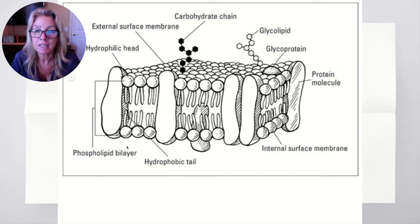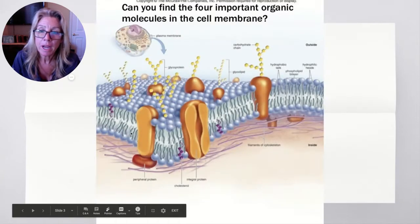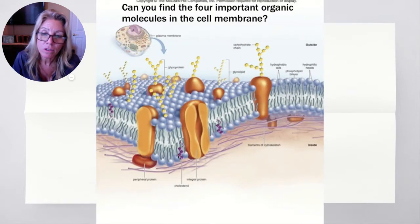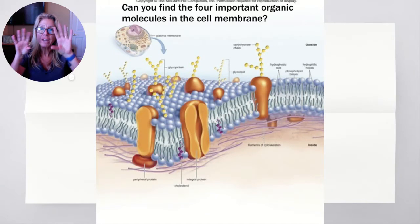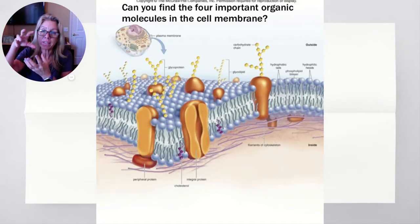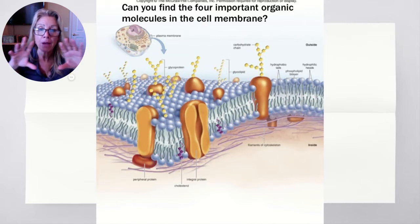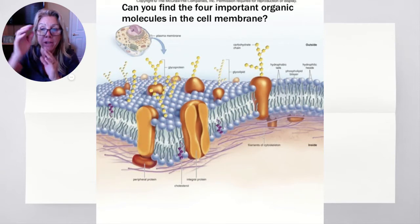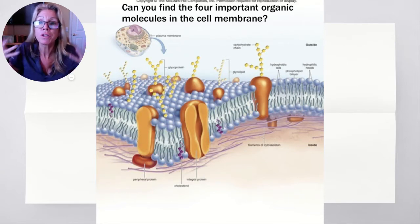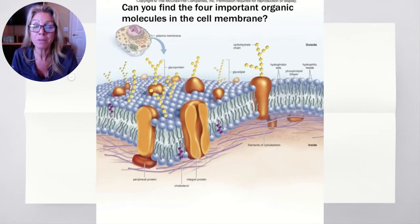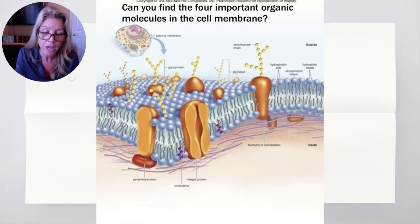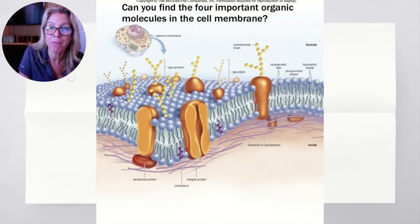Additionally, you can see the cholesterol molecules in here — in purple. The cholesterol molecules help fill in the spaces of the fatty acid chains hanging down in there. They prevent the phospholipid layer from freezing if it gets really cold, and if it gets really hot and molecules are moving faster, it keeps the integrity of the cell membrane so it doesn't fall apart.